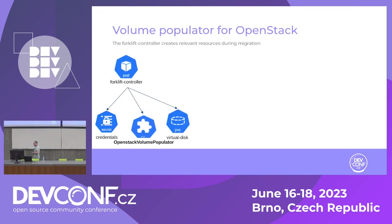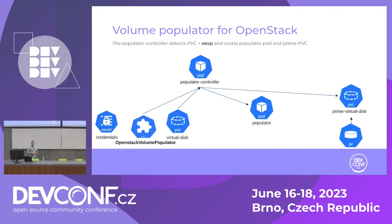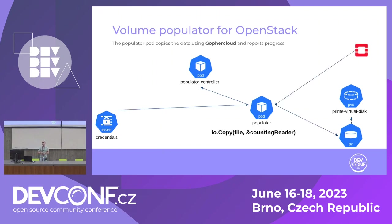The OpenStack volume populator works in a similar way. This time we post a CR called 'OpenStack volume populator'. The same controller creates the populator pod and the prime PVC. The populator pod runs code written in Go, using the Gophercloud library to connect to OpenStack, get the data from there, and dump it to the PV.